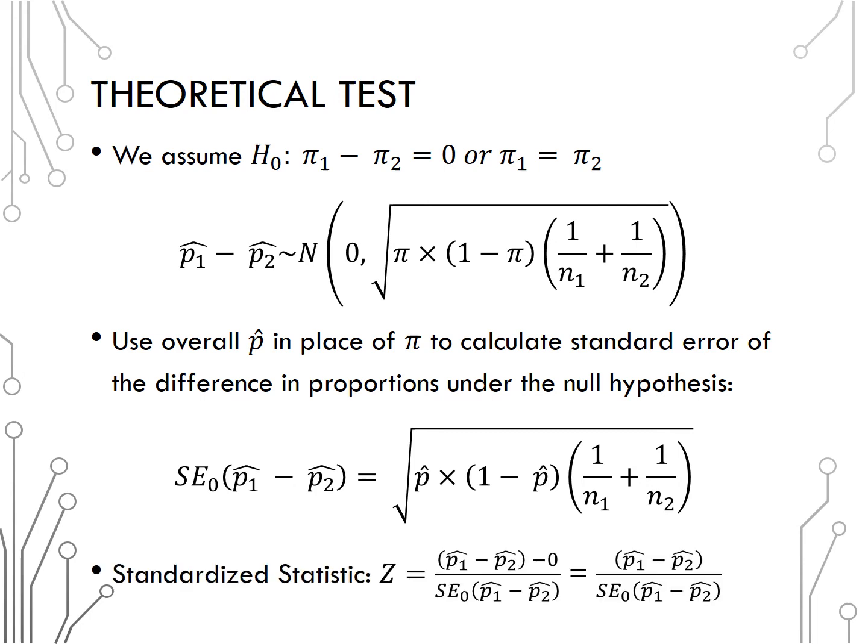That allows us to calculate our standardized statistic. We will use z since we are using the normal distribution. Our statistic is the difference in sample proportions. Our null value is 0, and we just talked about the standard error. So our standardized statistic will be p hat 1 minus p hat 2 divided by the standard error just discussed.